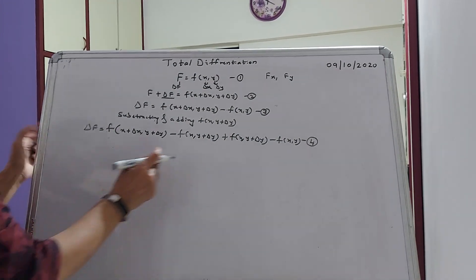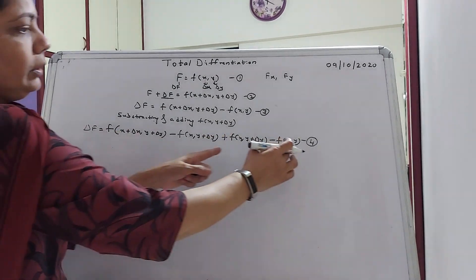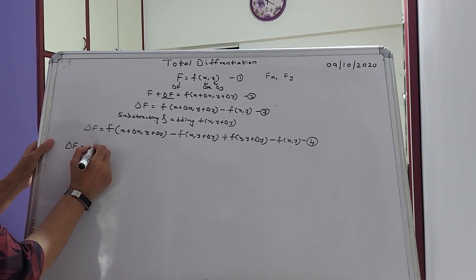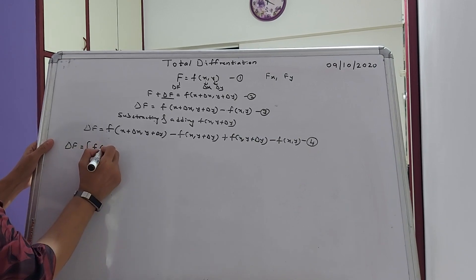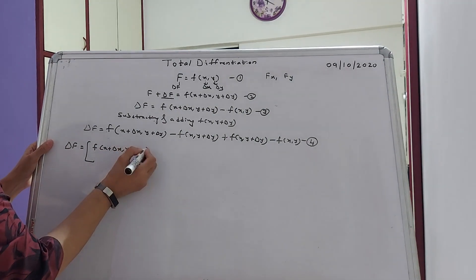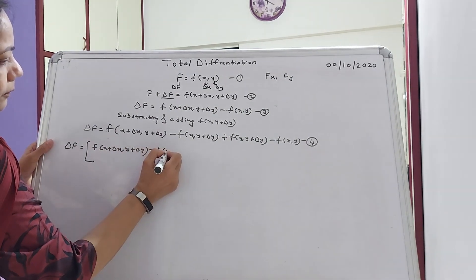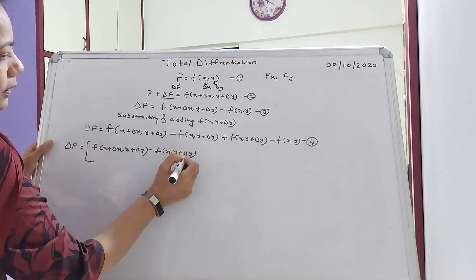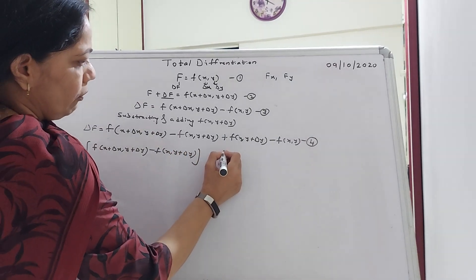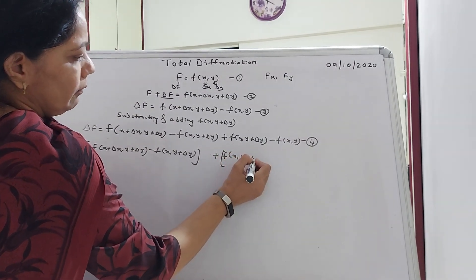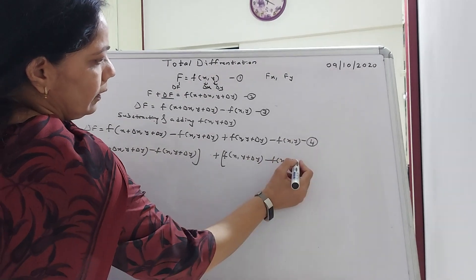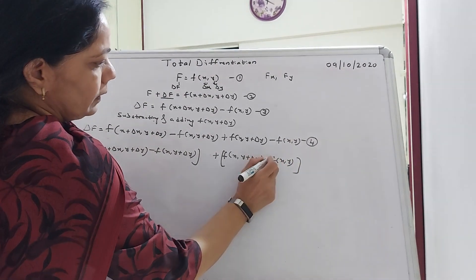Then what to do next now? Then I will take these two terms in one bracket and these two terms in another bracket. So I will have delta F is equal to F of X plus delta X, Y plus delta Y minus F of X, Y plus delta Y, plus F of X, Y plus delta Y minus F of X, Y.